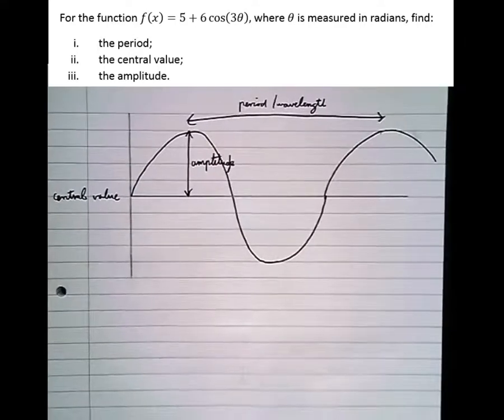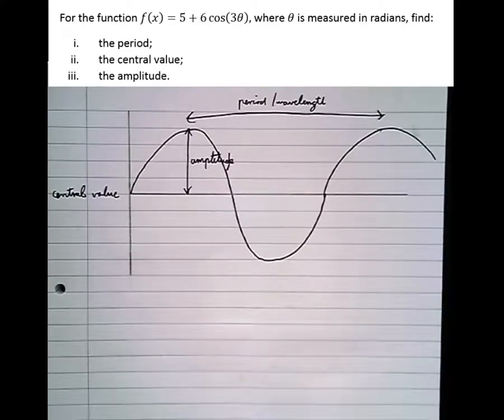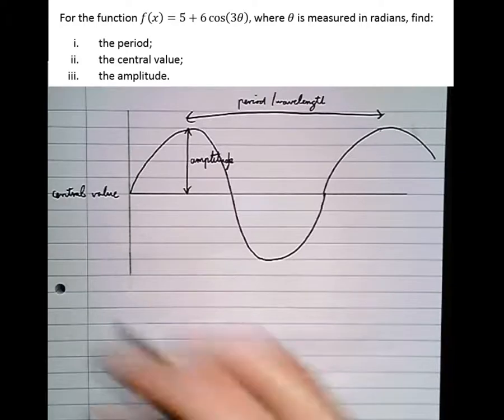So there are three new terms to do with sine and cos graphs. Now having a look at the question, it says for the function f(x) equals 5 plus 6 cos 3θ, where θ is measured in radians, find the period.